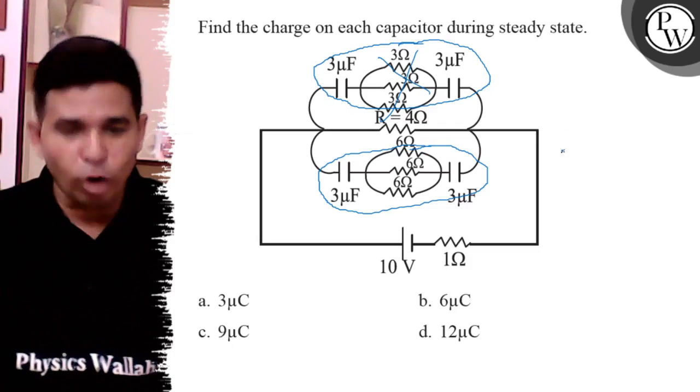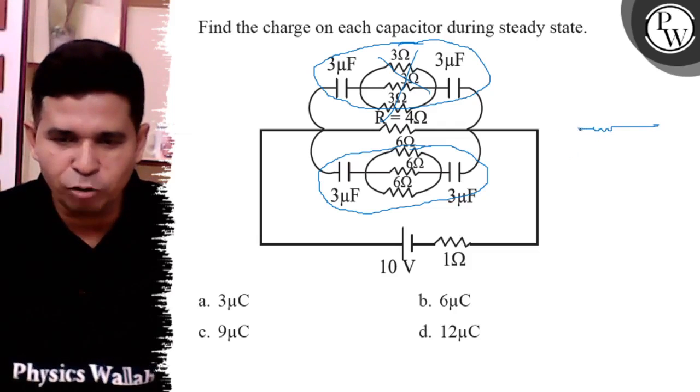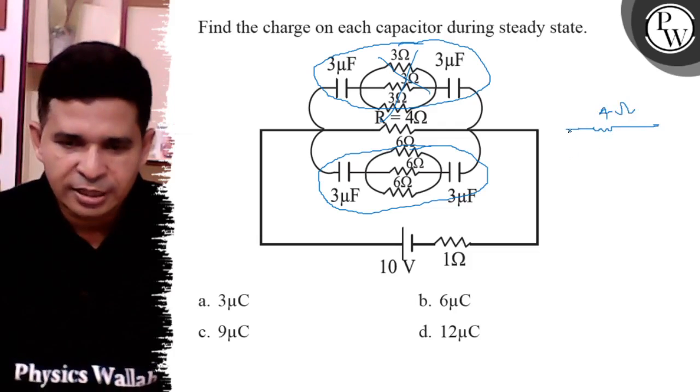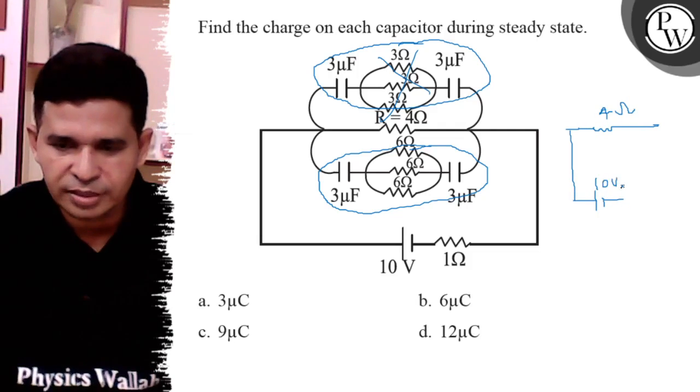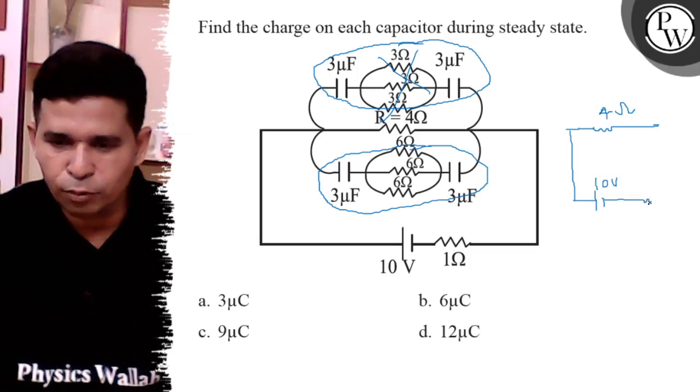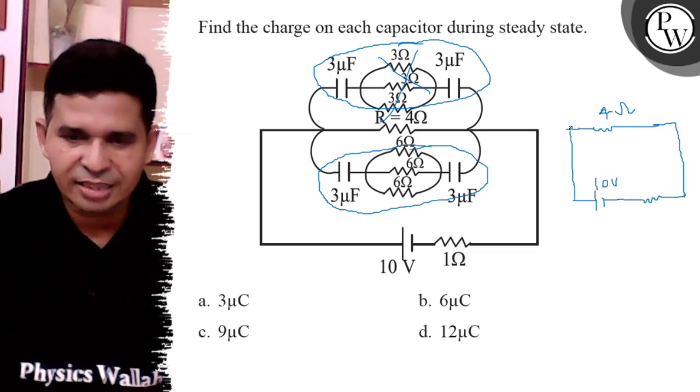And find the voltage drop across parallel resistance. So, after removing these two parts, it is the 4 ohm and it is the 10 volt. And it is the 1 ohm and find the, and it is the removed part.